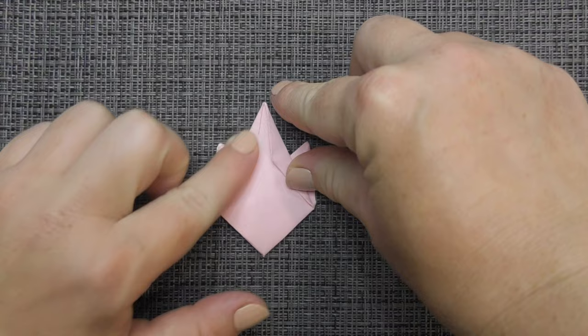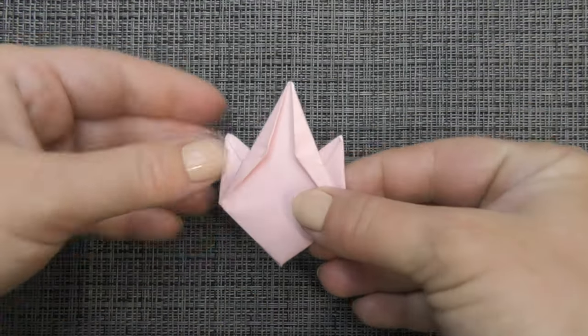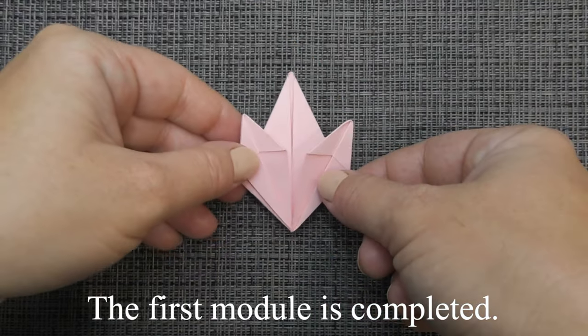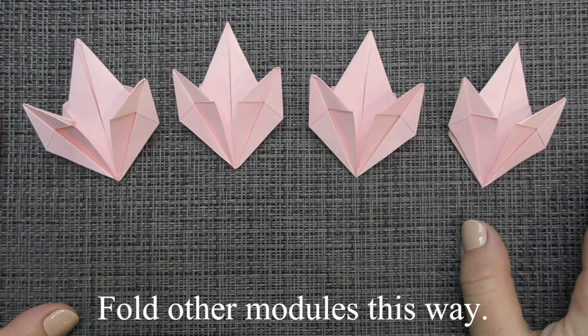Let's cut the left underneath. The first module is completed. Fold other modules this way.